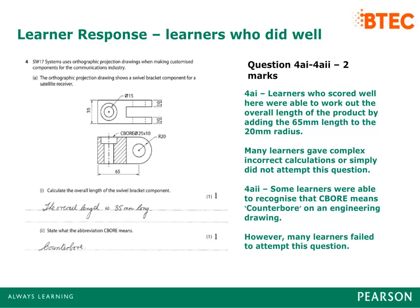Learners who scored well here were able to work out the overall length of the product by adding the 65mm length to the 20mm radius. Many learners gave complex incorrect calculations or simply did not attempt this question.